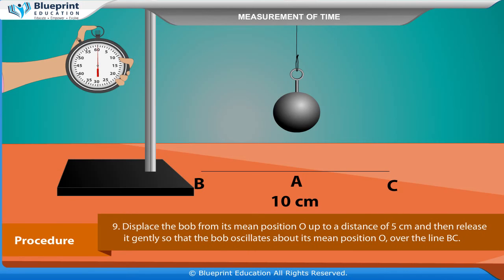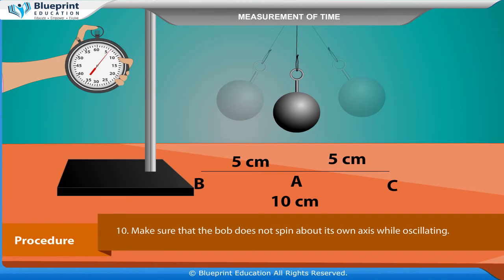Displace the bob from its mean position O up to a distance of 5 cm and then release it gently so that the bob oscillates about its mean position O over the line BC. Make sure that the bob does not spin about its own axis while oscillating.